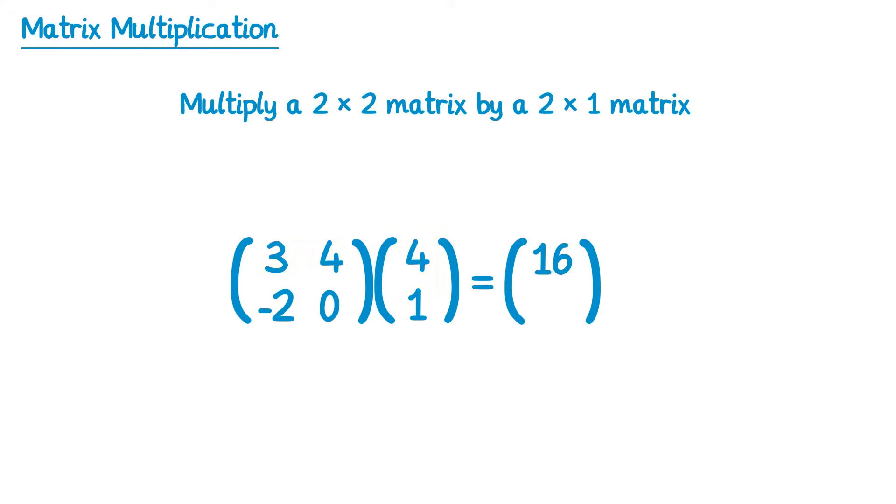You then repeat this process but this time with the second row. So we've got negative 2, 0, and we match that up with the only column we've got, 4, 1. So we did the first element, so negative 2 times the 4, which gets you negative 8. And then the second element, the 0 here, times the 1, which gets you 0. So we add on 0, which of course gets you negative 8. So the answer is another 2 by 1 matrix, 16, negative 8.